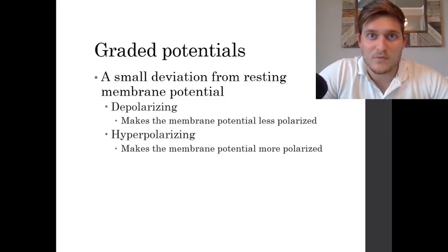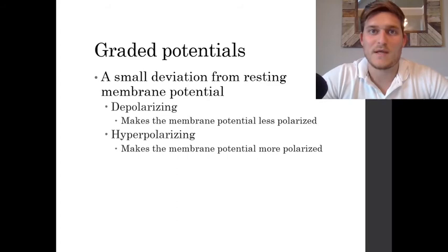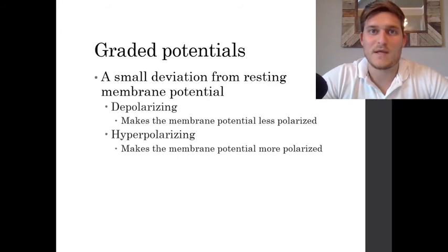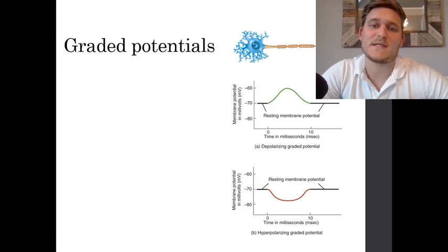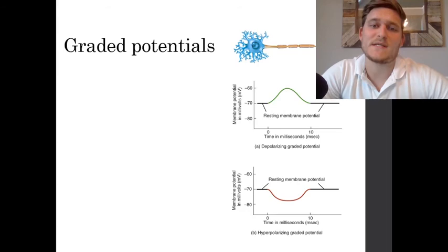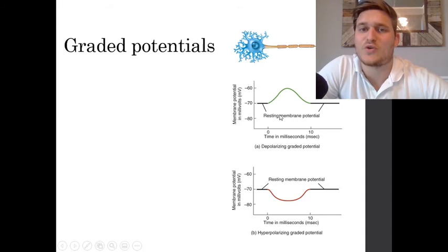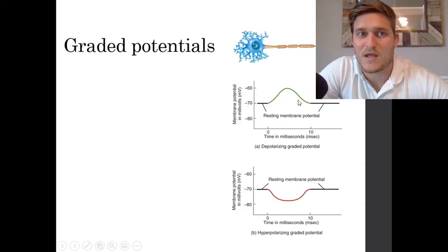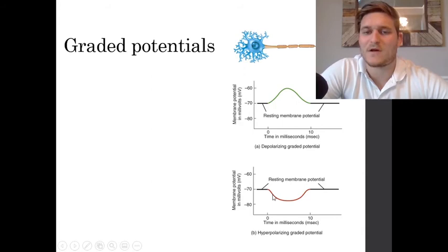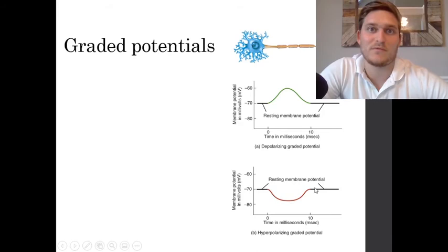When ion channels open and ions move across the plasma membrane, there is going to be a deviation from resting membrane potential — this is called a graded potential. Graded potentials can either be depolarizing, meaning we're taking the cell to a less polarized state, or hyperpolarizing, meaning we're taking it towards a more polarized state. When a depolarizing stimulus occurs, more positive charges enter the neuron, causing depolarization, and the graded potential can then return back to resting. A hyperpolarizing graded potential causes positive ions to leave the cell, creating a more negative, hyperpolarized state before returning to resting membrane potential.